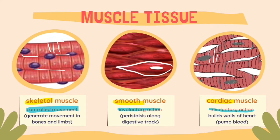The skeletal muscle contracts and relaxes to generate movement in the bones and lids. Next, we have the smooth muscle. As mentioned before, this muscle is involved in involuntary action such as the peristalsis that occurs along the digestive tract. Lastly, we have the cardiac muscle. The cardiac muscle builds up the walls of the heart and helps the heart contract and relax so it can pump blood across the entire body.